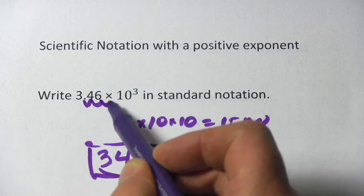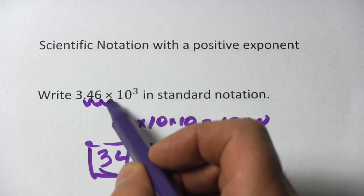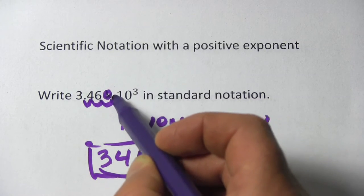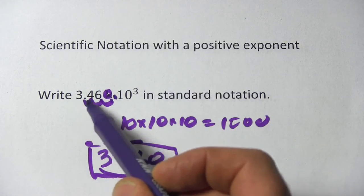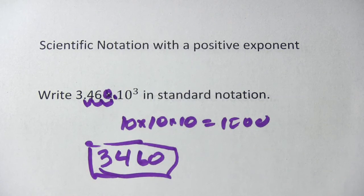1, 2, 3. And you notice I've got a blank space here. You just fill that in with a 0, and that's where your new decimal point goes. So you can see we get 3,460.